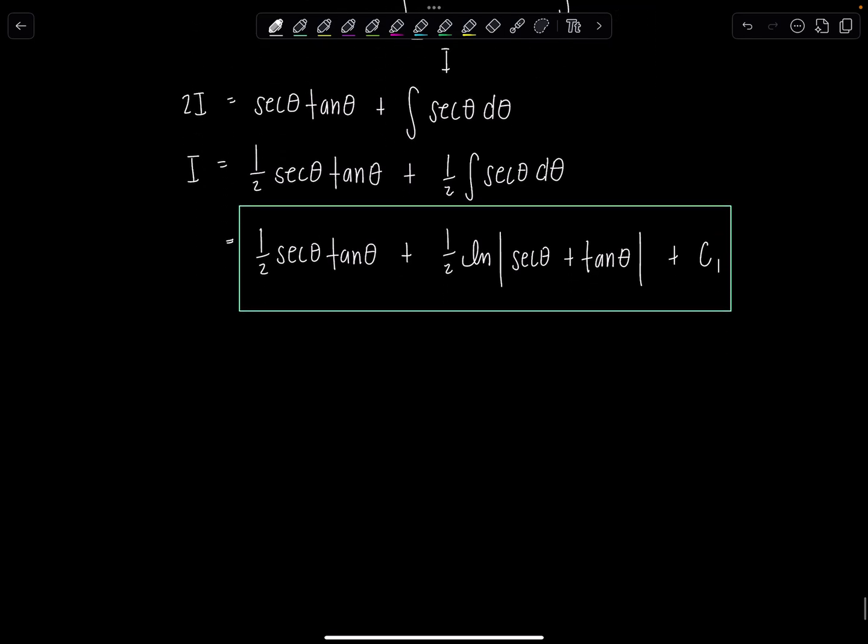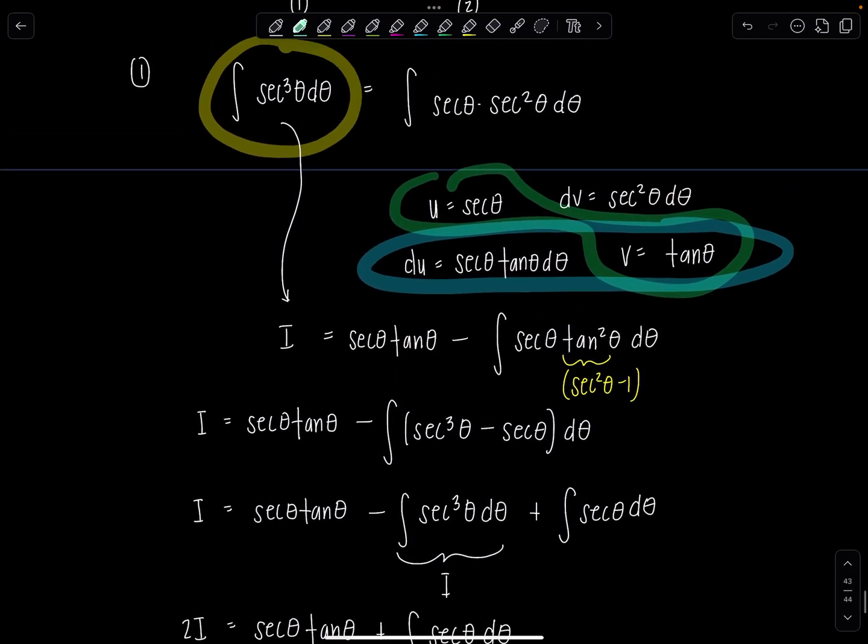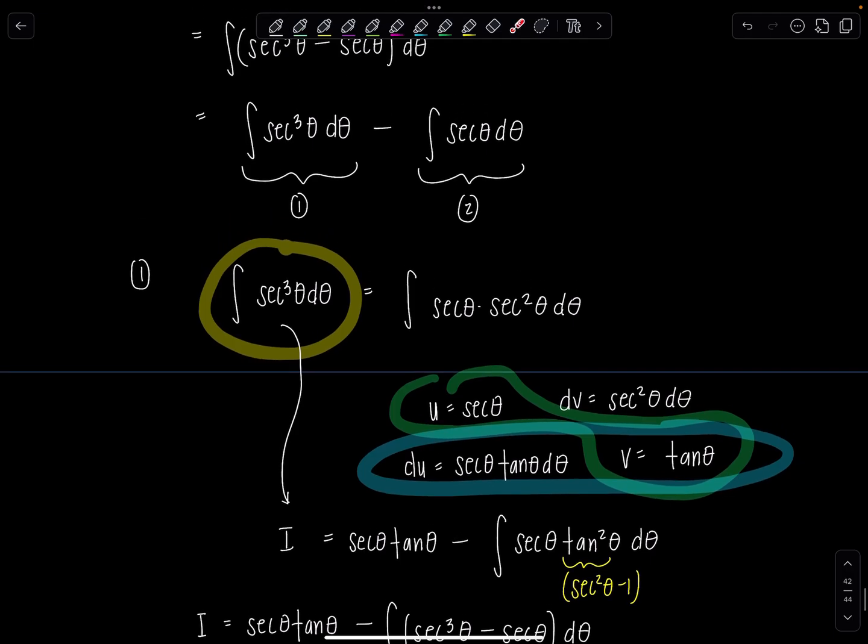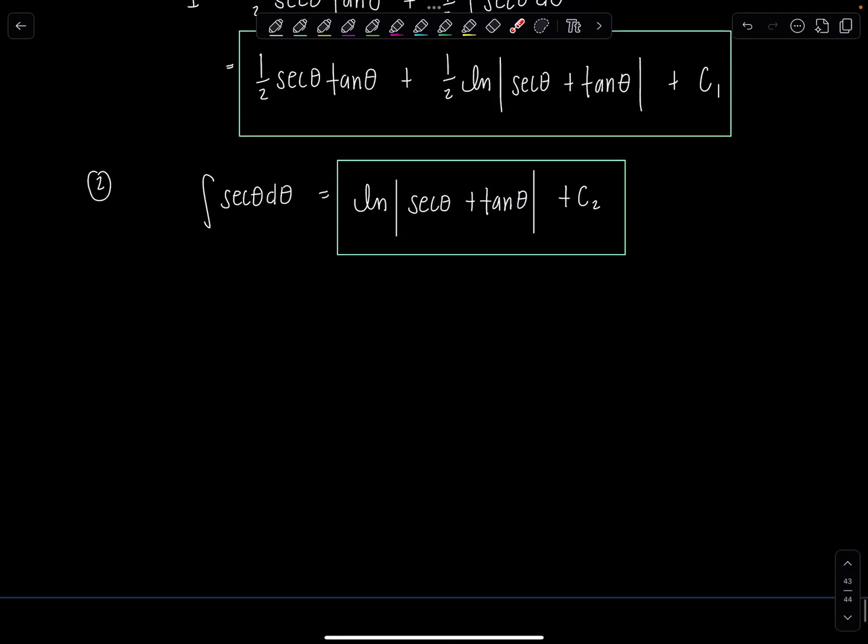So the other one, not very exciting. The other one is just integral secant theta, d theta. Well, we already know what that is. Ln, absolute value, secant theta, plus tan theta. I'll say plus c2. And then when we put it all together for our final answer, look at how we broke it up. We have to do the result from integral 1 minus the result from integral 2.